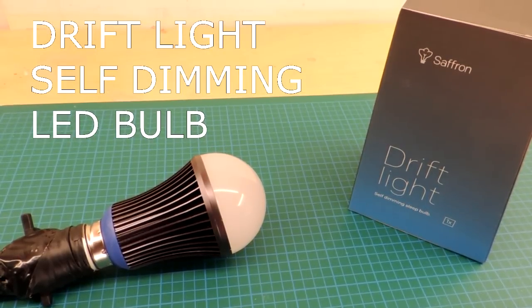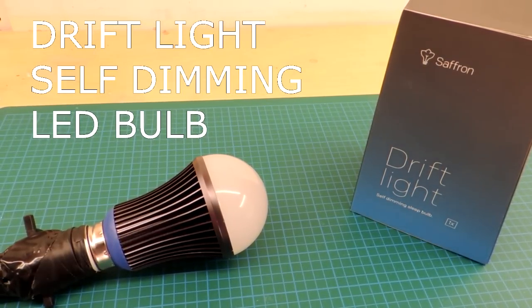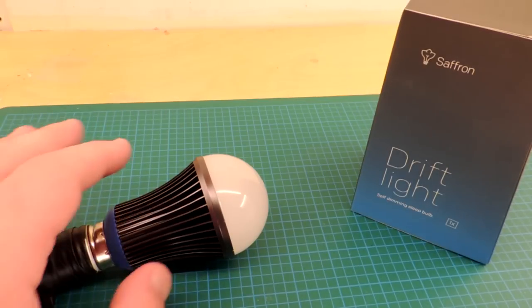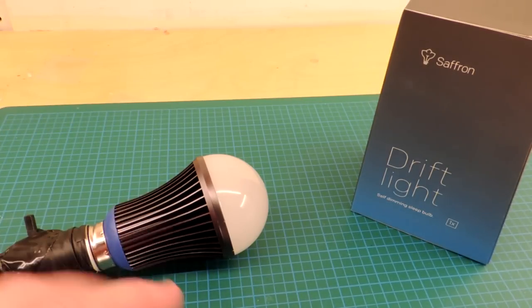Review time of a smart LED light bulb, this one's called the Drift Light. With LEDs now becoming mainstream, you're seeing a lot of bulbs which actually have intelligence built into them for various reasons.